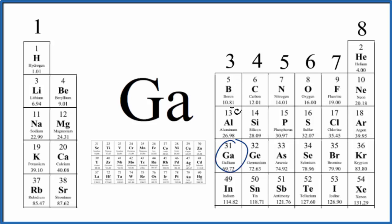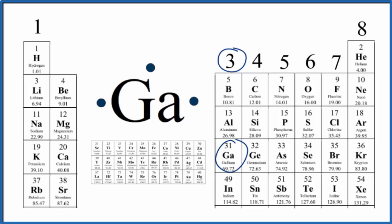So gallium right here, gallium's in group 13, sometimes called 3a. Gallium has three valence electrons. So we can just put those valence electrons on the outside here. And this is the Lewis structure for gallium.